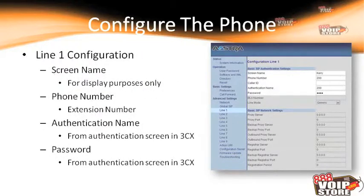Next, go to the Line 1 Settings. The first thing is to put in a screen name, which is for display purposes only — I usually put the person's name who sits at that desk. Then the phone number, which is the extension of the phone, the authentication name, which is usually the extension unless you've changed it, and the password from the authentication screen in 3CX. Getting that authentication name and password right is very important.